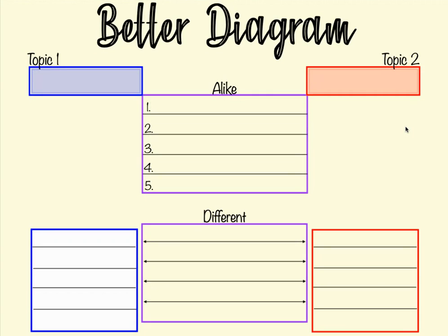In this diagram, you're more set up to have a sequential and logical flow when you start to compose your writing. On the left, you would have your first topic; on the right, your second topic. In the center is where you would list similarities and how the two are alike. Then you have a bottom row where you're going to contrast and list the differences — in the center you list how they're different, and on each side you give the detail of exactly what the difference is.